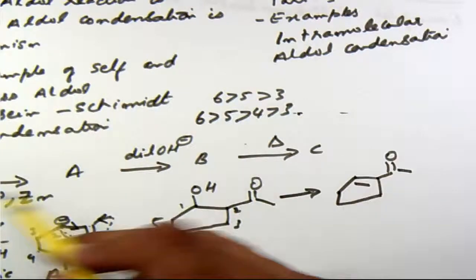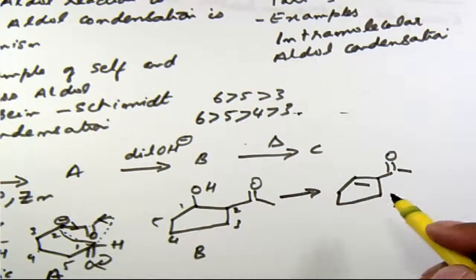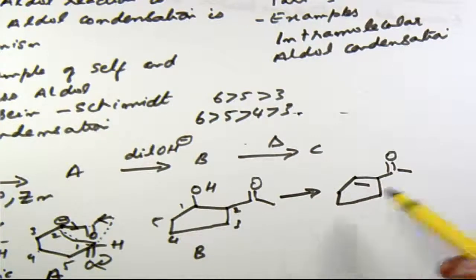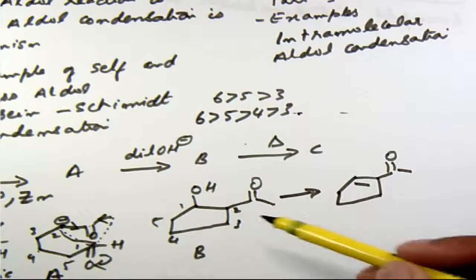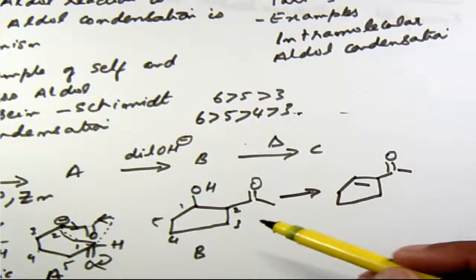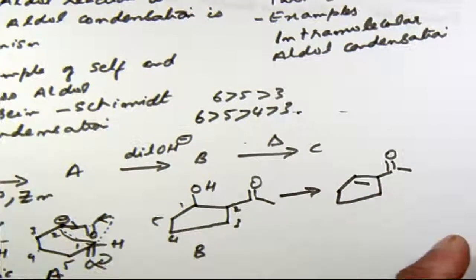So I started with a six membered ring and I ended up with a five membered ring. So basically this is the intramolecular aldol condensation and that too between an aldehyde and a ketone and the attack happens on the aldehyde carbonyl carbon by the alpha carbon of the ketone.